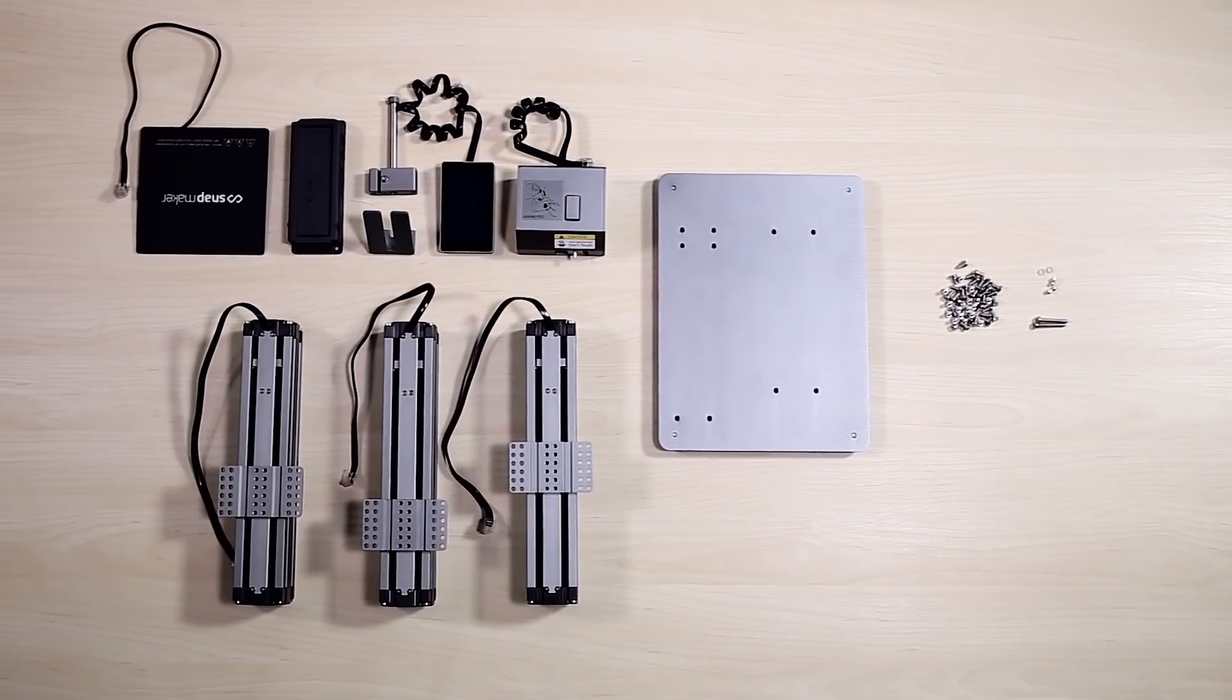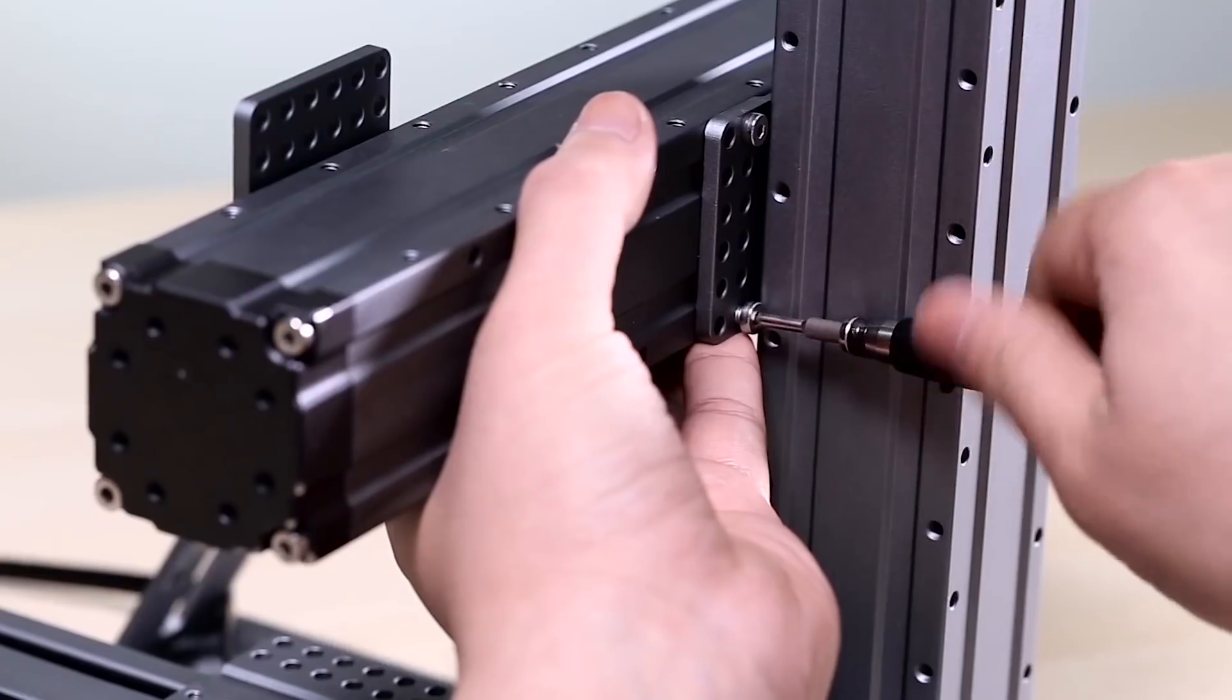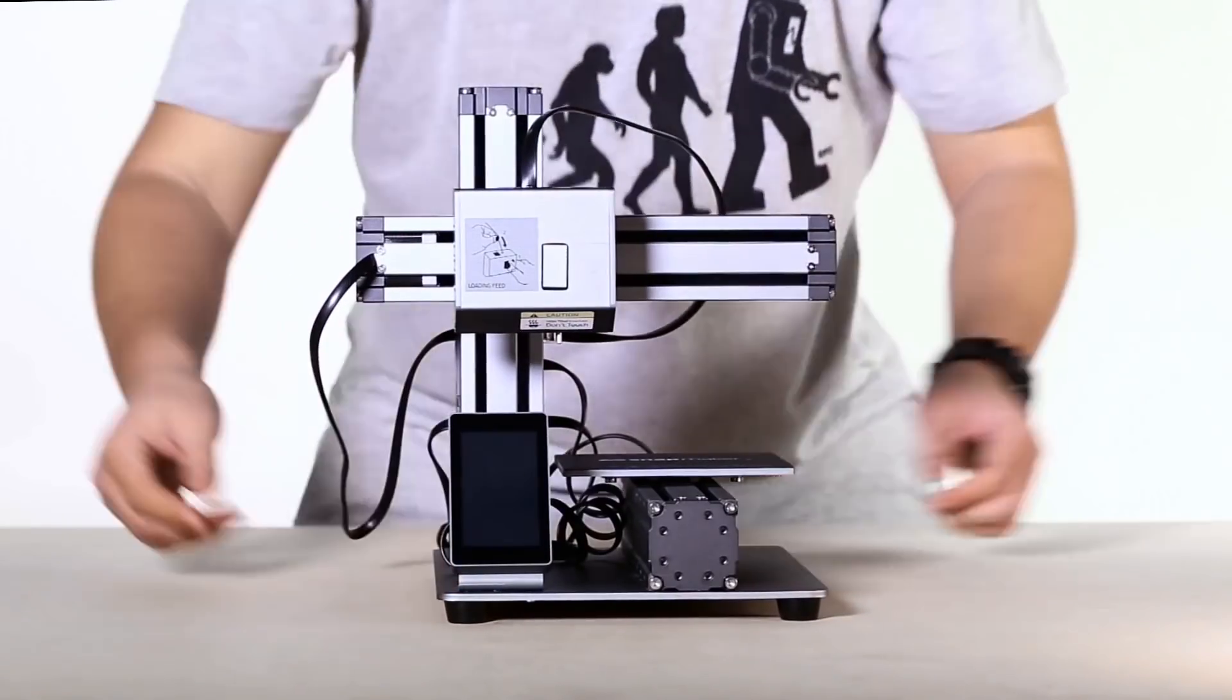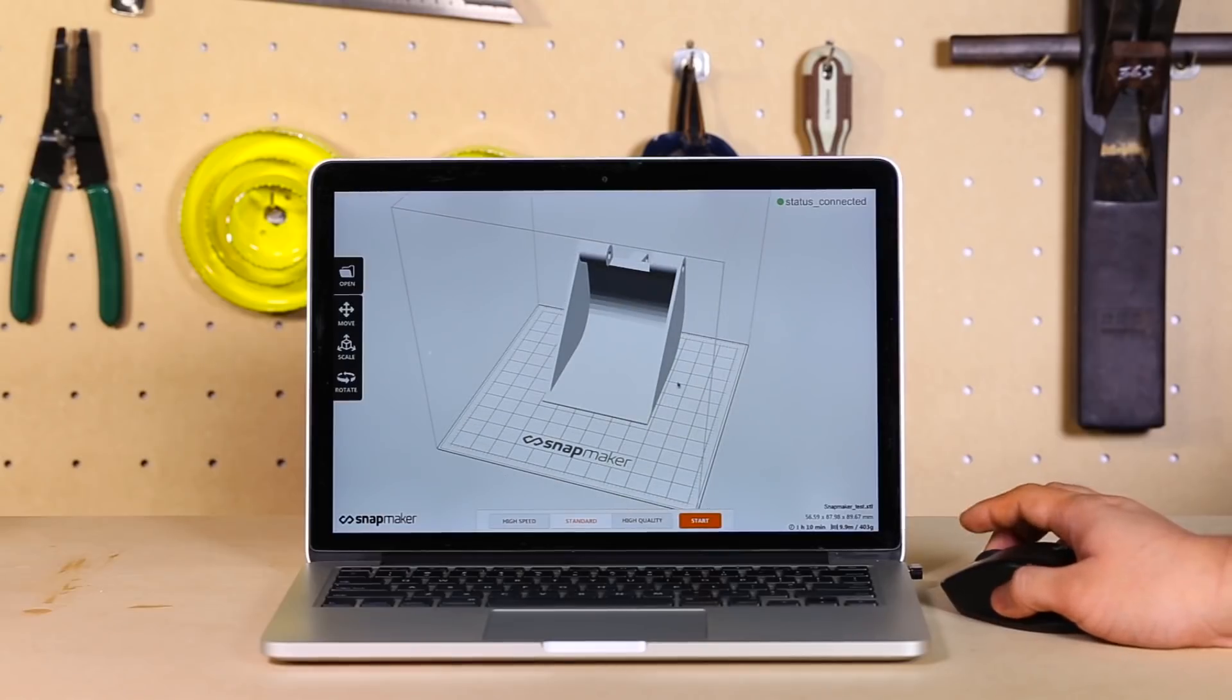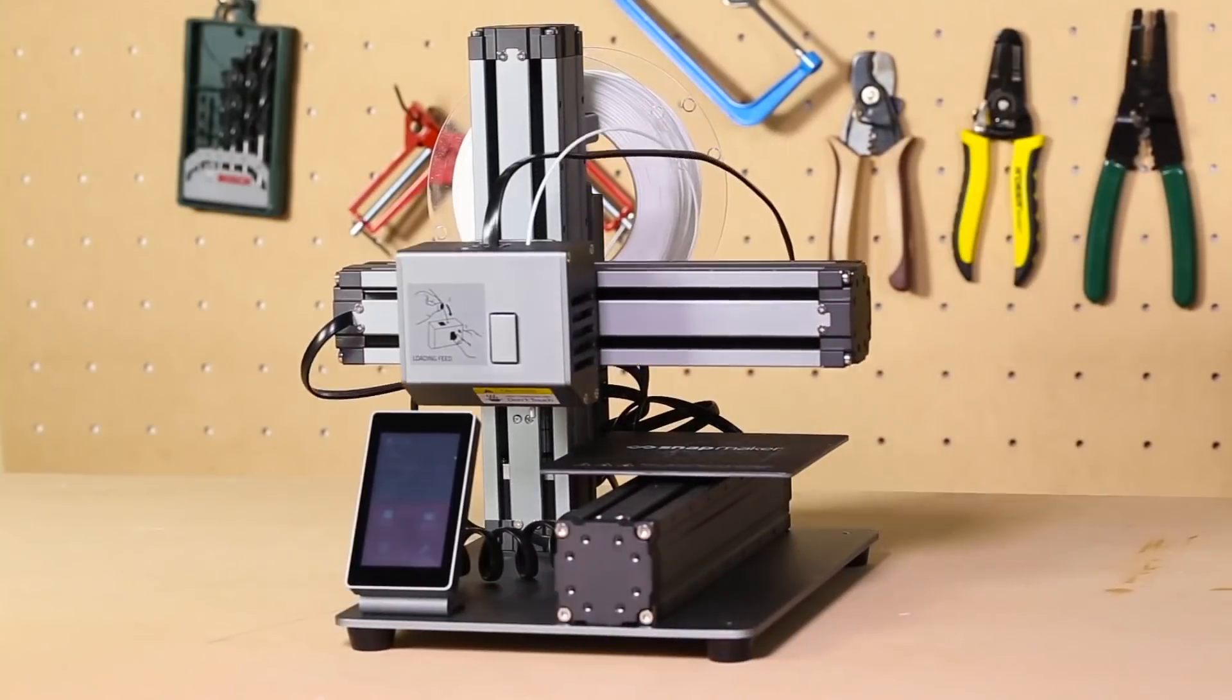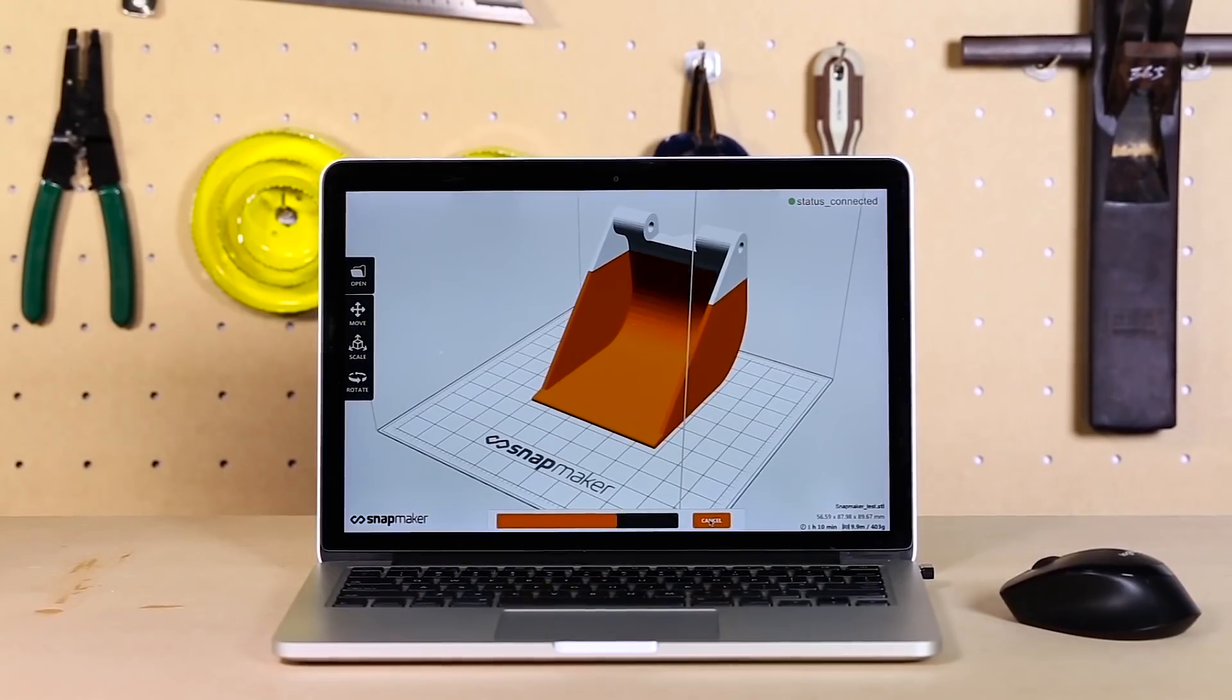Snapmaker also features an innovative modular design, giving you an easy setup of 10 parts in only 10 minutes, which is the best ever on a 3D printer. It comes with easy-to-use software. Simply drag and drop a model into it and click start. You do the design and let the Snapmaker do the rest. It's hassle-free from start to finish.